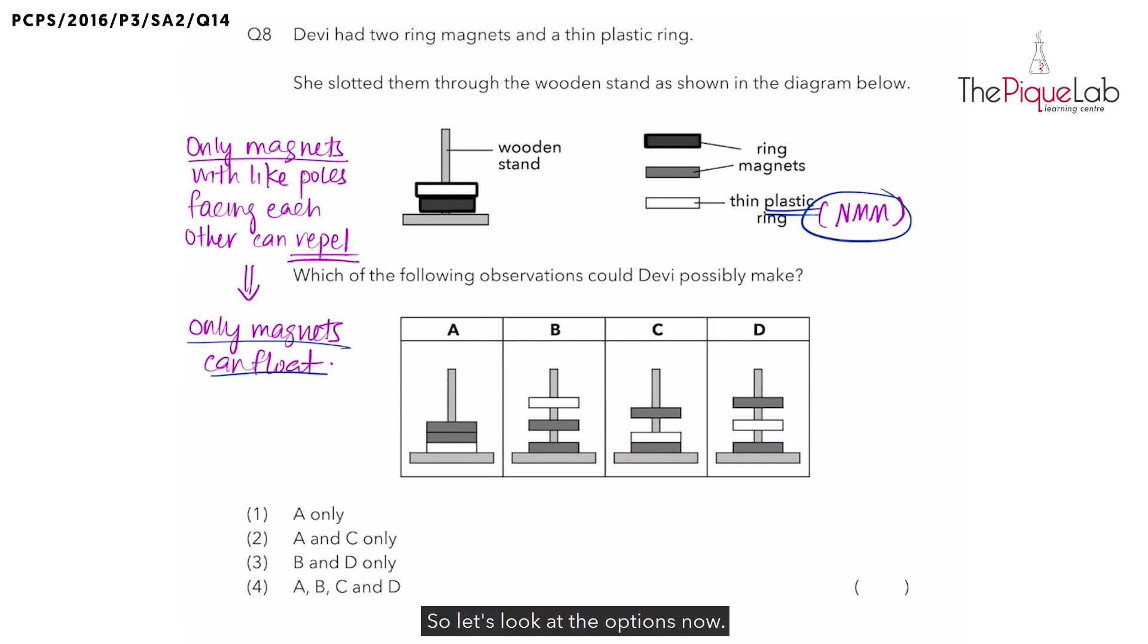So let's look at the options now. We can actually eliminate some answers immediately. Remember, only magnets can float. The plastic ring should not be floating. If you look at B, we see this plastic here, which is a non-magnetic material floating. Is this possible? Nope. We cannot see a plastic ring floating. So we can cross this out. Which other options do we see the plastic ring floating? Yes, D. So this is also not possible. Let's cross this out too.